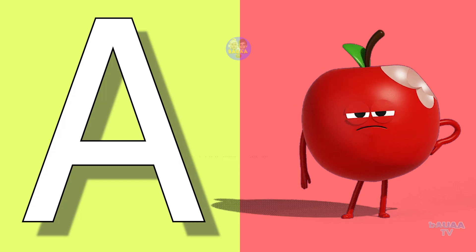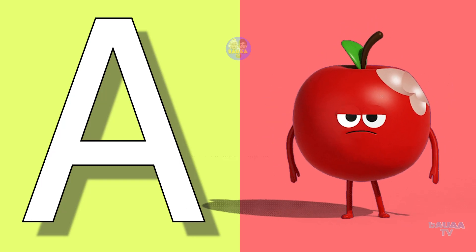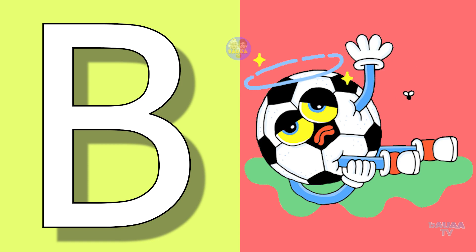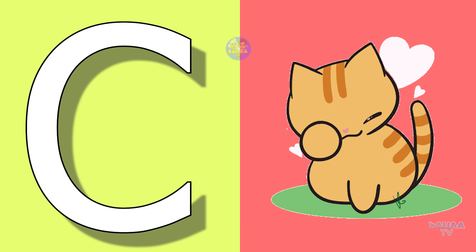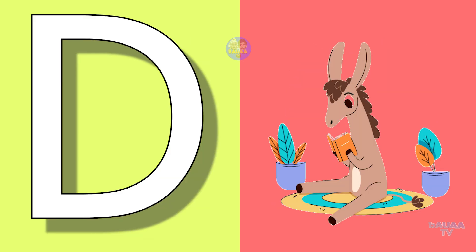A for apple, apple means sib. B for ball, ball means game. C for cat, cat means billi. D for donkey, donkey means gadha.